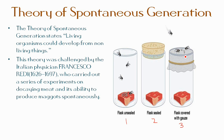Flies laid their eggs on the uncovered meat and maggots developed. The other two pieces of meat did not produce maggots spontaneously. However, flies were attracted to the gauze-covered container and laid their eggs on the gauze, which then produced maggots. Thus, the generation of maggots by decaying meat resulted from the presence of fly eggs, and meat did not spontaneously generate maggots as previously believed.